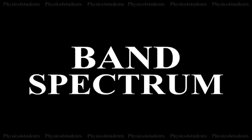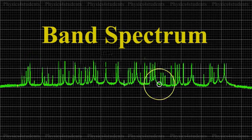What is band spectrum? It consists of a number of bright bands with a sharp edge at one end but fading out at the other end.